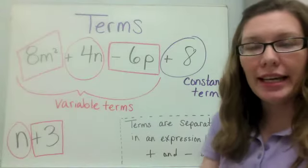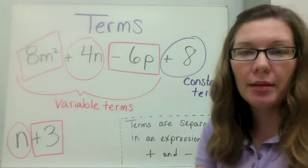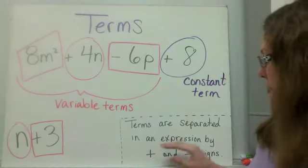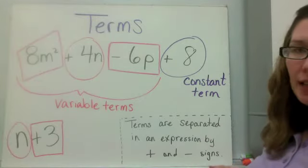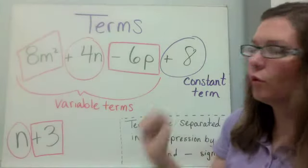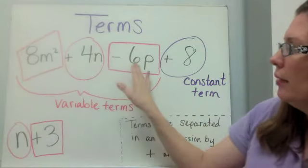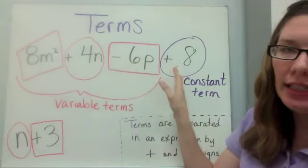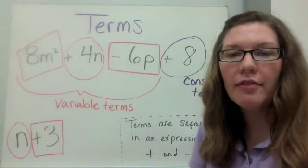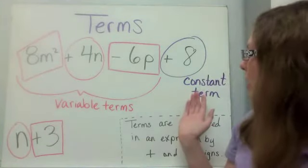When we're looking at expressions, expressions are made up of terms, and terms are separated in an expression by plus and minus signs. This expression has four terms. We can see 8m squared plus 4n minus 6p plus 8. Three of the terms are variable terms, and one is a constant term.